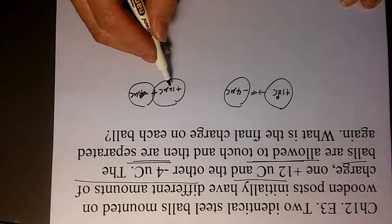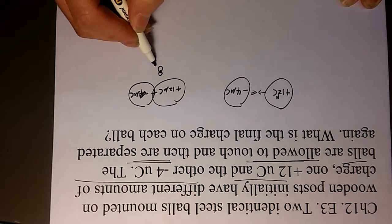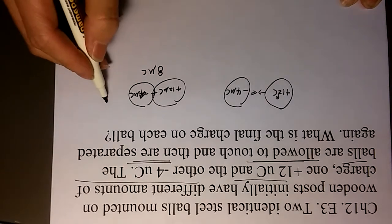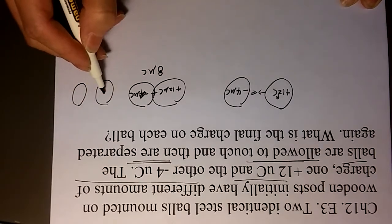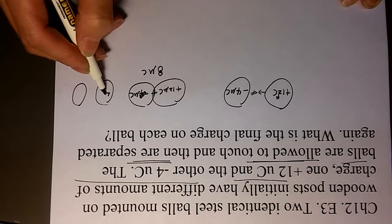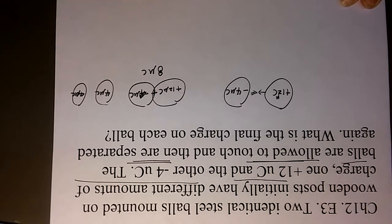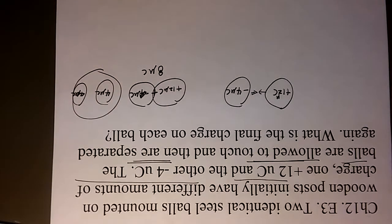Then altogether should be 8 microcoulomb, and then after you separate it, you're supposed to have 4 microcoulomb and 4 microcoulomb each. That is your answer.